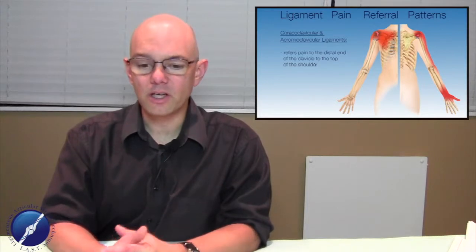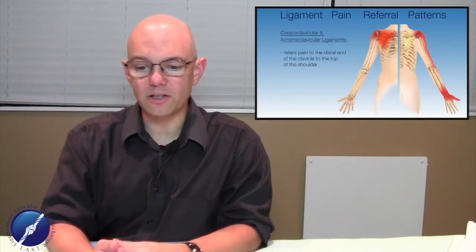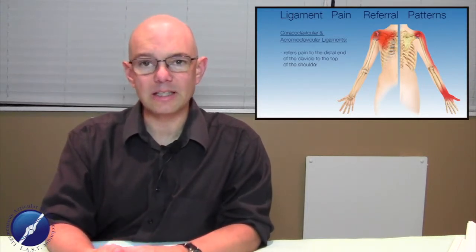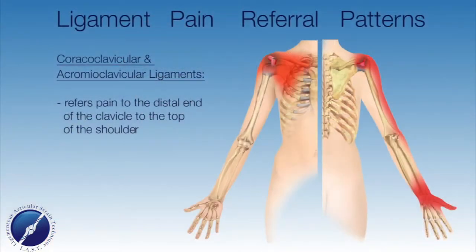We're going to start with the coracoclavicular and the acromioclavicular ligamentous tissues. These typically will refer pain to the distal end of the clavicle and also to the top of the shoulder.